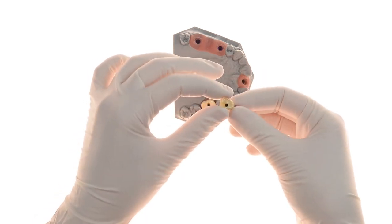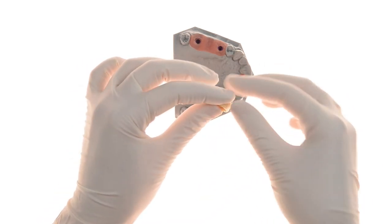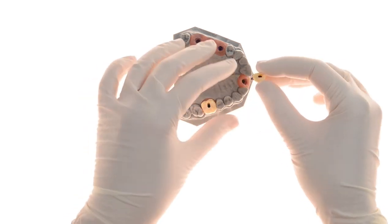Once the restoration is milled, the screw is positioned inside the adjustable EasyBase. Then the restoration is cemented to it.